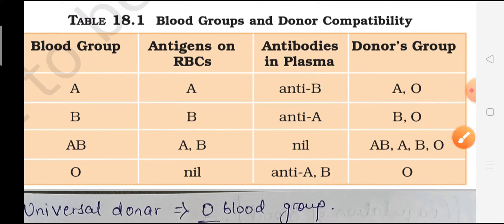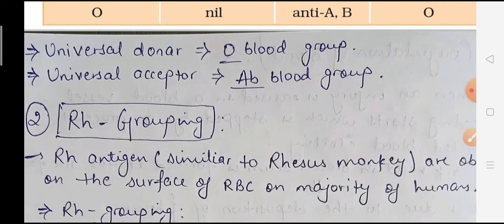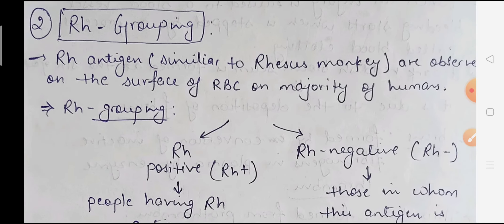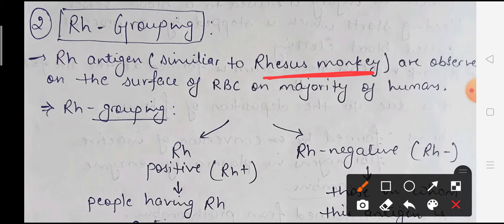We have also heard that blood groups can be negative or positive - A negative, A positive, etc. This negative or positive characteristic is discussed in Rh grouping. The Rh antigen is similar to that found in rhesus monkeys - it was first observed there, and named after them as Rh grouping.